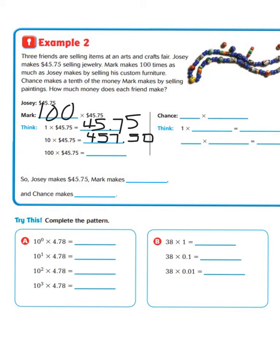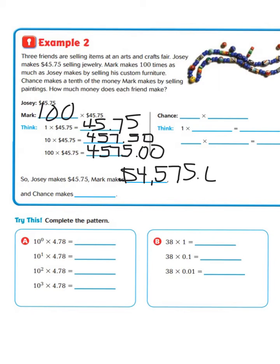Now, 100 times $45.75 — we have two zeros in 100, so we are going to have to move our decimal place two places to the right, giving us $4,575. Now let's take a look at what Chance makes. It says Chance makes a tenth of the money Mark makes. So we know that to illustrate a tenth, we will use a decimal point. Chance makes one tenth of what Mark makes, which is $4,575.